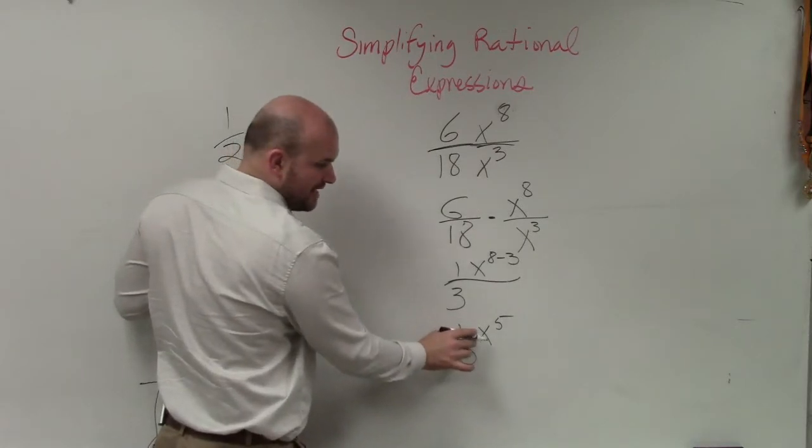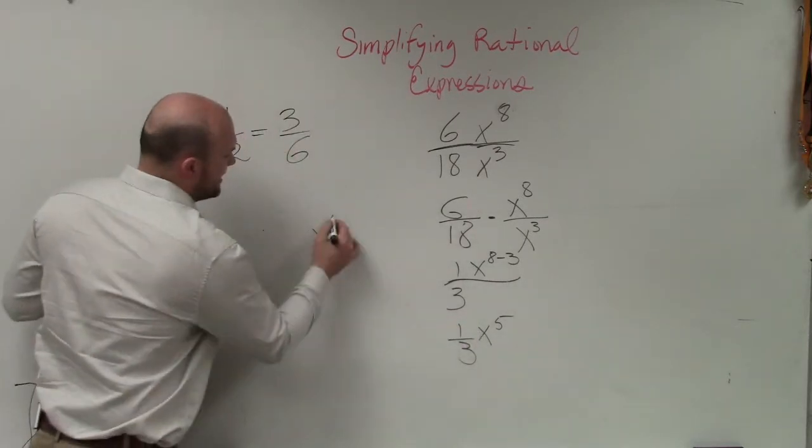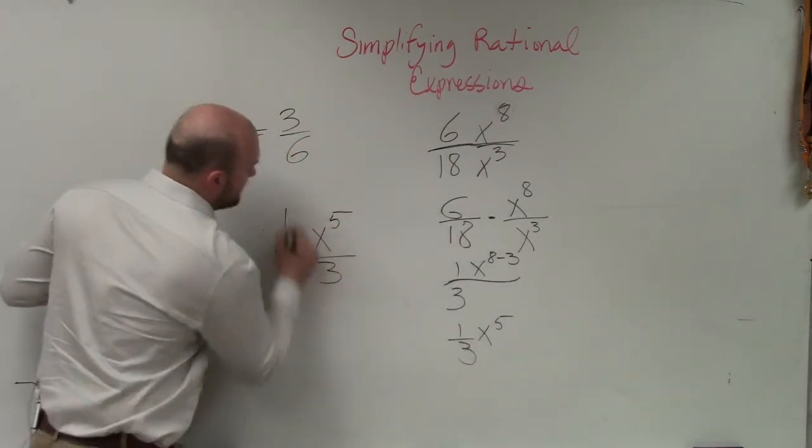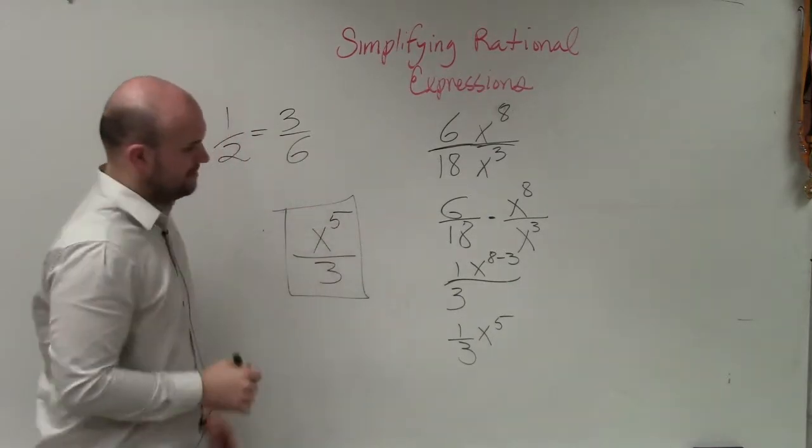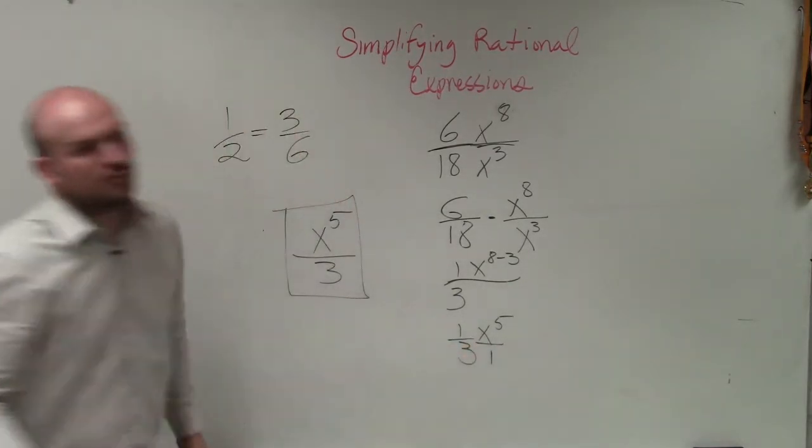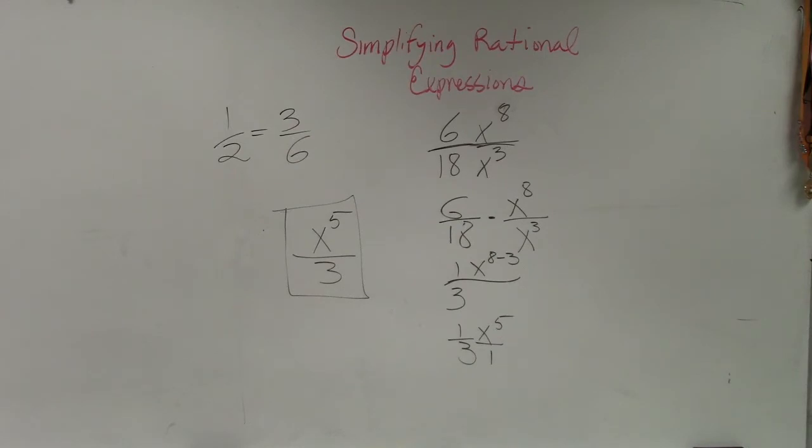Which that's in the numerator, right? So your final answer, you guys can write, is x to the fifth divided by 3, because that's really times 1 over 1. Okay. So I will... Excuse me right there. Why don't you put the answer right there?